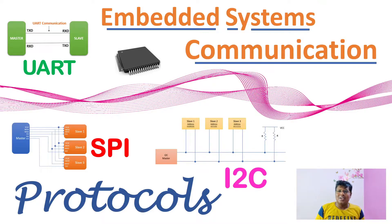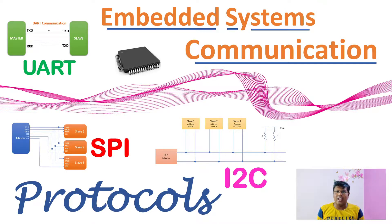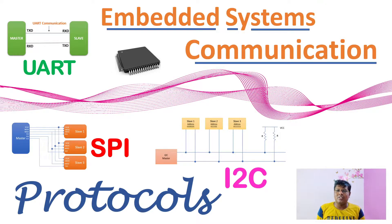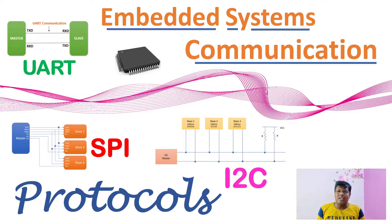Hello everyone! Today let's see the three most commonly used communication protocols in embedded systems. The first protocol is Universal Asynchronous Receiver and Transmitter, the second protocol is Serial Peripheral Interface, and the third protocol is Inter-Integrated Circuit communication.